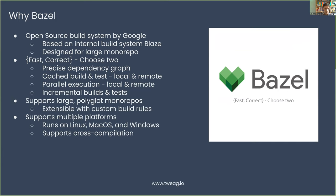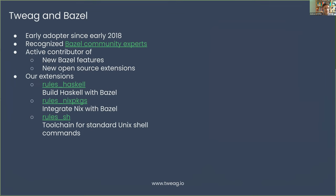Bazel supports large monorepos and polyglot monorepos, meaning projects in which you have different components written in different languages that are interdependent. Bazel is extensible with custom user-defined build rules to support additional languages, and you can express dependencies between components in different languages within the same system. It also supports multiple platforms — Bazel itself runs on Linux, macOS, and Windows — and it supports cross-compilation with an extensible mechanism to define target platforms.